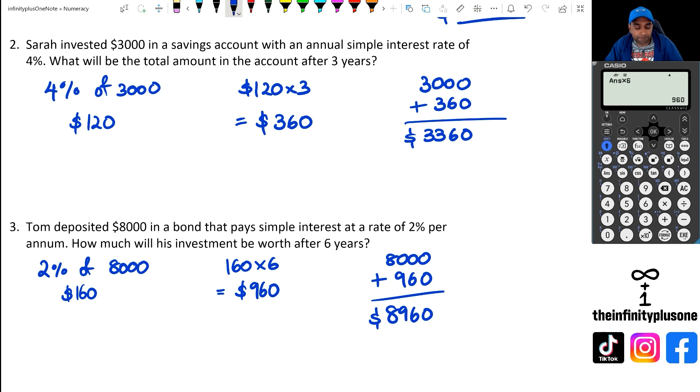So as you can see, folks, with these kind of simple interest questions, you work out the simple interest, depending on how many years you want it for, multiply it, and then you just add it to the original amount to show what the investment will be after a certain period of time.